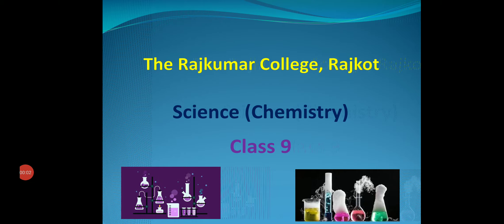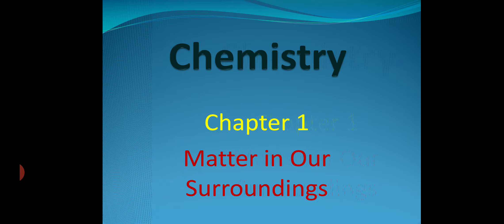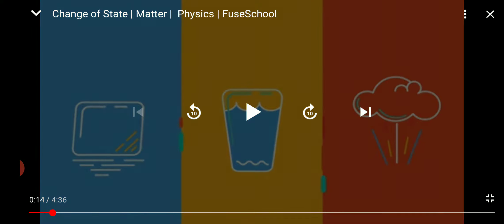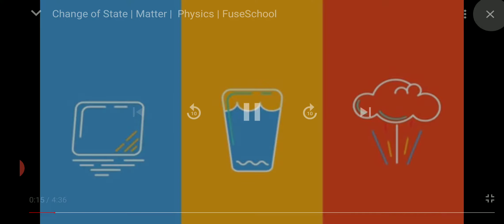Dear students, welcome to the Rajkumar College Rajkot class 9th Chemistry. Here we will understand the important concepts of chapter 1, Matter in Our Surroundings. In this video, I will be explaining the different states of matter and the changes around it.